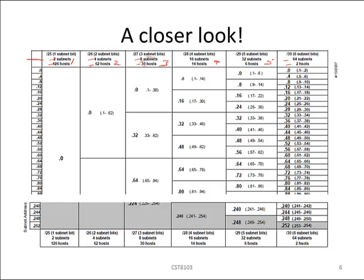Another example: if our subnetting requirements call for at least three subnets, the recipe that matches would be a slash 26. A slash 25 only provides two subnets and there is nothing in between, so we go to the closest, which is four. We would have four subnets, each carrying 62 usable IP addresses, having borrowed two host bits into networking bits.